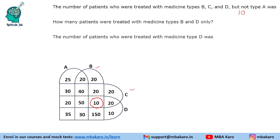How many patients were treated with medicines types B and D only? That region is 150. How many patients were treated with medicine type D? Adding all D region values: 150 plus 50 is 200, plus 40 is 240, plus 30 is 270, plus 20 is 290, plus 35 is 325. So 325 patients were treated with medicine type D. That was the solution to the set.